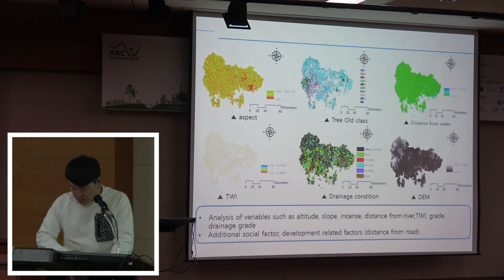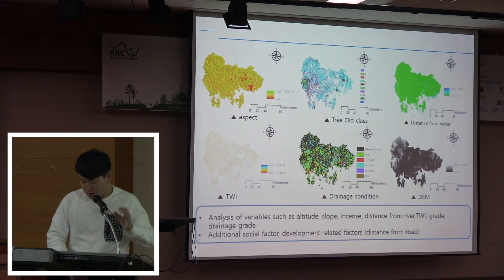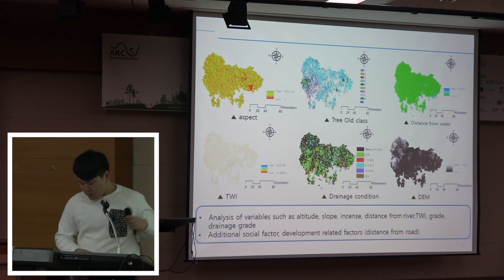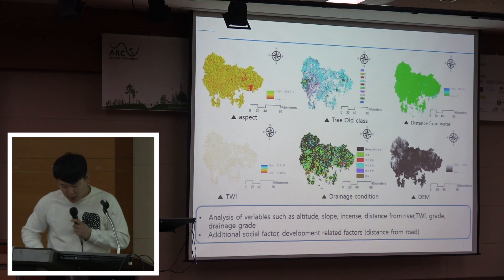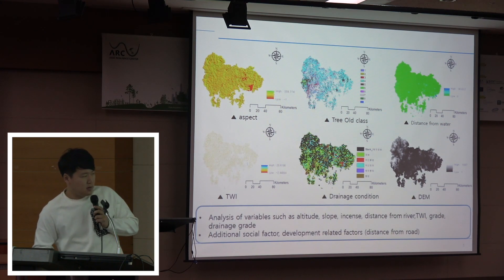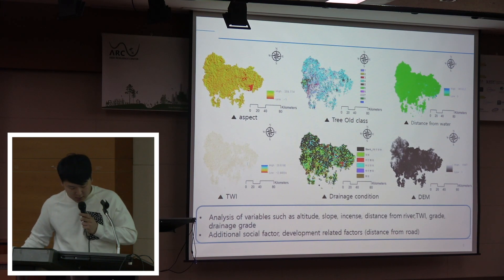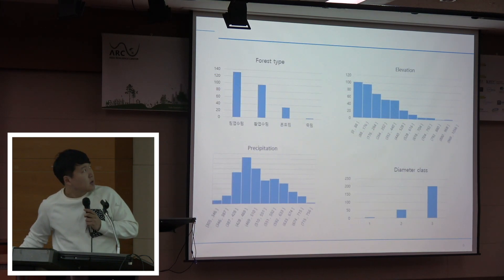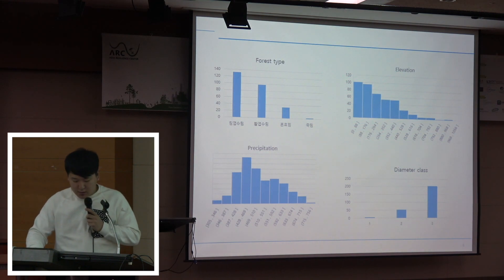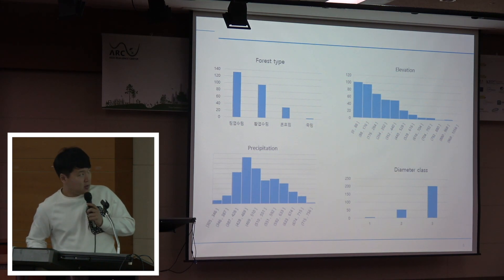The study area is the Gangnam-Busan area. Additional social factors which are development-related factors are also considered, such as the distance from roads. This is the statistics from the actual landslide points.